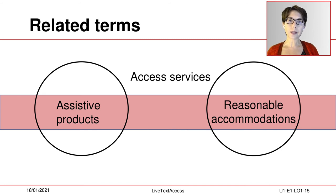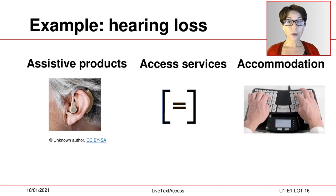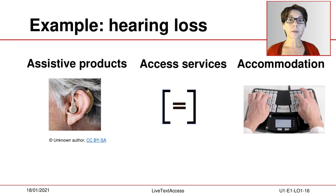The interplay of assistive products, access services and accommodations enables inclusion through accessibility. These terms or services are not interchangeable — they are complementary. Each of these solutions helps in a different way and in different situations. Persons with hearing loss always make an extra effort to listen and understand, using several communication strategies such as using a hearing aid, lip reading, or reading subtitles. Therefore, accessibility can only be possible when all these input possibilities are available, as all of them also have their limitations.